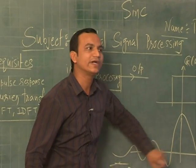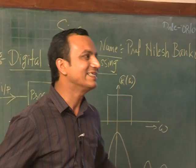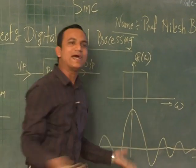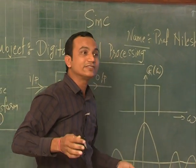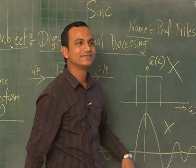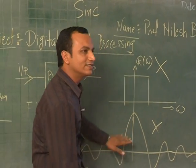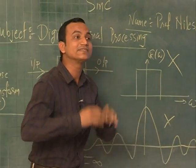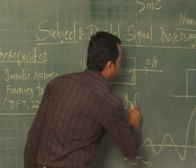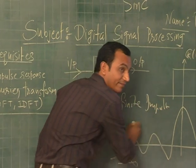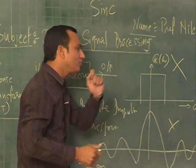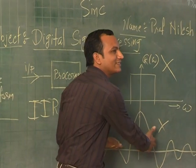Can I generate a sinc signal in a laboratory? Obviously not, because sinc goes from minus infinity to infinity — there is no concept of minus infinity in real time. So if I can't generate this time signal, I can't achieve the ideal low-pass filter response. This infinite response is called IIR — infinite impulse response — which is not what we want. We want FIR — finite impulse response.